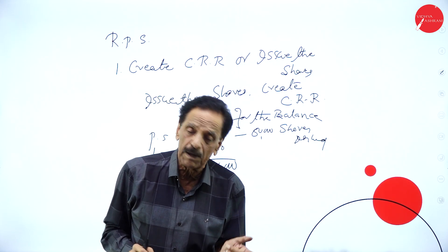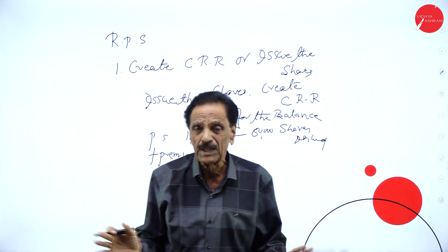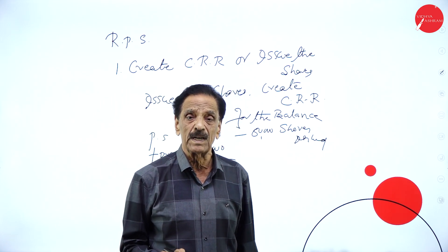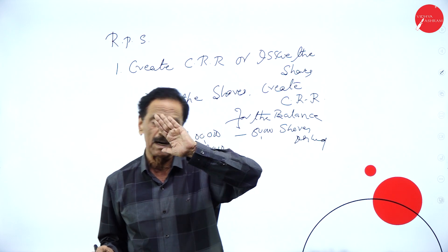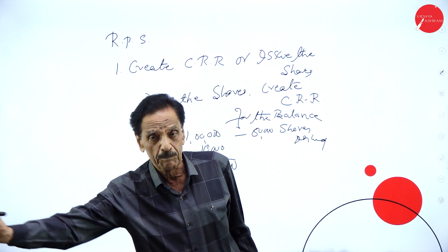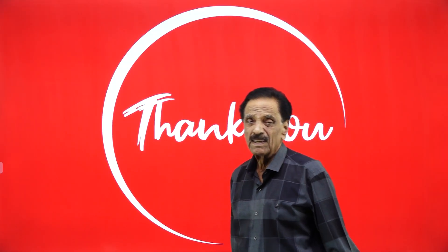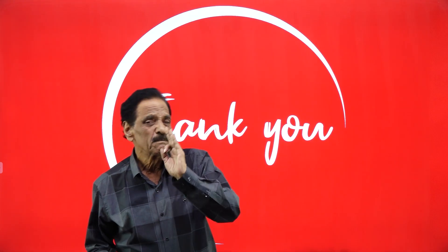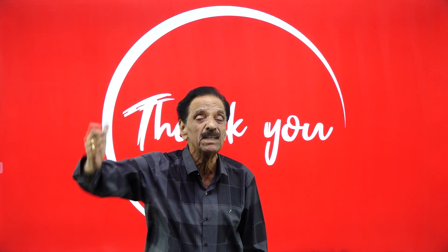Once the CRR is created, the transfer entry is: Redeemable Preference Share Capital Account Dr. 1 lakh, Redeemable Preference Share Premium Account Dr. 10,000 to Redeemable Preference Shareholder Account 1 lakh 10,000. Then pay: Redeemable Preference Shareholder Account Dr. to Bank Account. If utilizing both equity share premium and profit and loss for the premium, debit both. In the next session, I will solve problems on redemption of preference shares. Goodbye and see you in the next session.